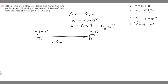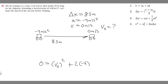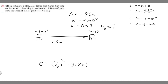Plugging into equation four: v squared equals v-sub-zero squared plus two times a times delta x. Since v is zero, zero squared equals zero. So: 0 equals v-sub-zero squared plus 2 times negative four times 85. That gives us 0 equals v-sub-zero squared minus 680.